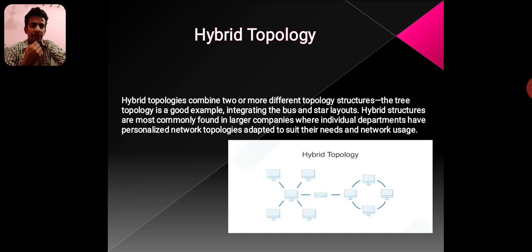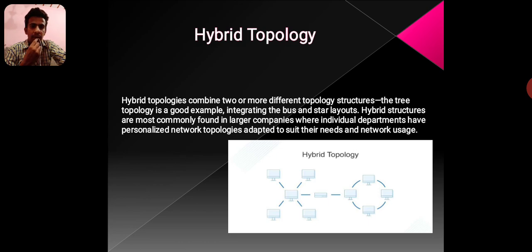Hybrid Topology. Hybrid topologies combine two or more different topologies. The tree topology is a good example, integrating the bus and star layouts. Hybrid structures are most commonly found in larger companies where individual departments have personalized network topologies that adapt to suit their needs and network usage.